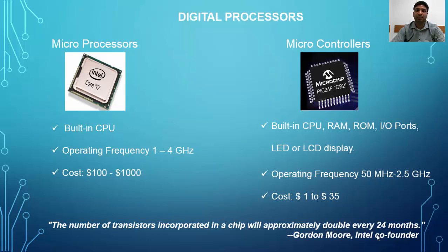Gordon Moore, the Intel co-founder, once predicted that the number of transistors on a single chip will approximately double every 24 months.